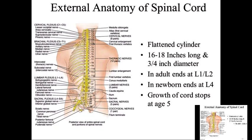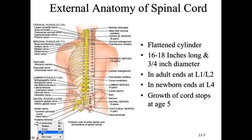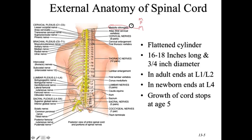The spinal cord starts at around C1, where the medulla is. The medulla is part of the brainstem, which is made up of the midbrain, pons, and medulla. The medulla is the most inferior part and is protected by C1 and C2. C1 is the atlas — like the Greek god holding up the world — and C2 is the axis.